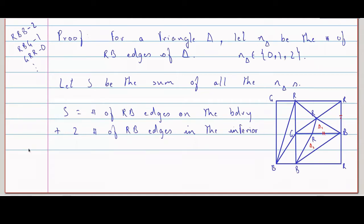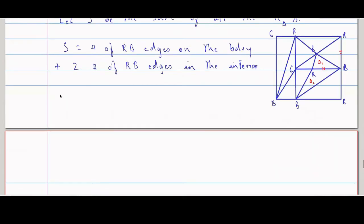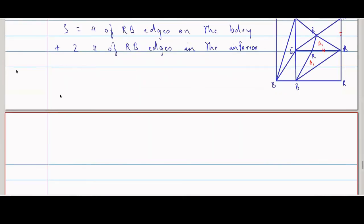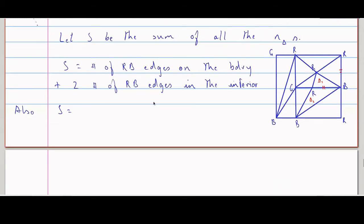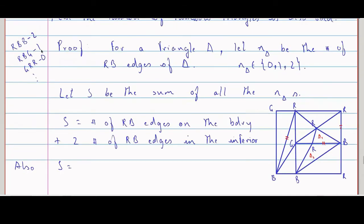Is this point clear? Now, do we have any rainbow triangle here? R, G, B — yes, so this is one rainbow triangle. If I have a red-blue edge here, for a rainbow triangle the n(delta) will be one. It's one for a rainbow triangle.